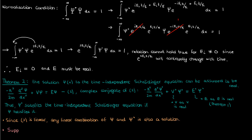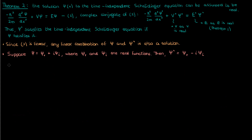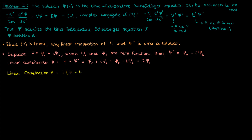Suppose that small ψ is a complex function with real part ψ_r and imaginary part ψ_i, which are both real functions. Then ψ* is the same as ψ but with a minus sign in front of the imaginary part. Taking a linear combination of ψ and ψ* is still a solution to the time-independent Schrödinger equation. One linear combination is the sum of ψ and its conjugate, which gives two times ψ_r since the imaginary parts cancel. Another linear combination is i times (ψ minus ψ*), which gives two times ψ_i.